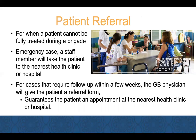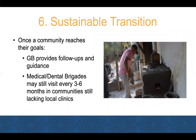The last step of the holistic process is called sustainable transition. Once a community reaches the goals they laid out with GB at the start of the holistic process, GB will slowly start to transition themselves out of the community, leaving them in an empowered state — which is the ultimate goal. Leaving the community doesn't mean stopping everything; GB will still follow up to ensure things are running smoothly. In areas where it's impossible to get to a local clinic, GB will still sometimes run a medical and dental brigade back in every three to six months.